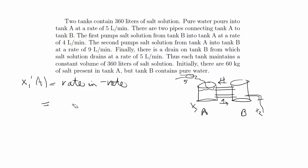So the rate in of salt is x2 over 360 because the volume this time is 360 liters, so that's the concentration. And the rate in is 4, the rate out is going to be 9. So 9 times x1 over 360. So that's the first one.